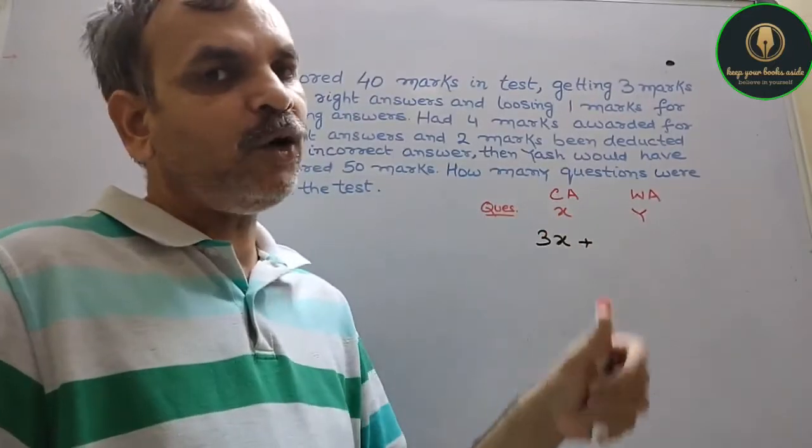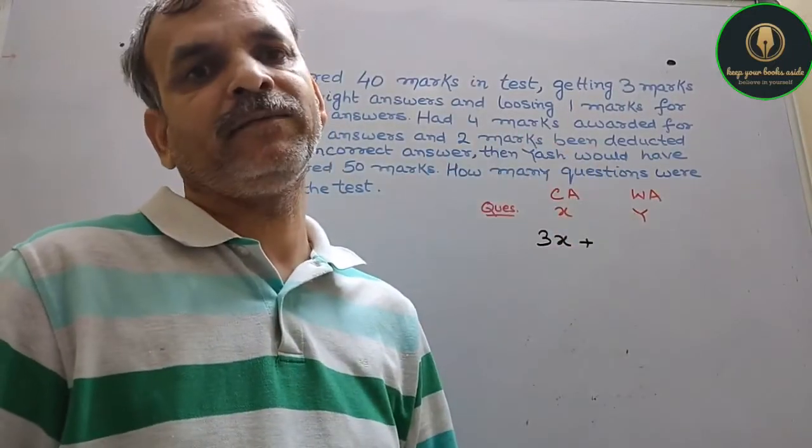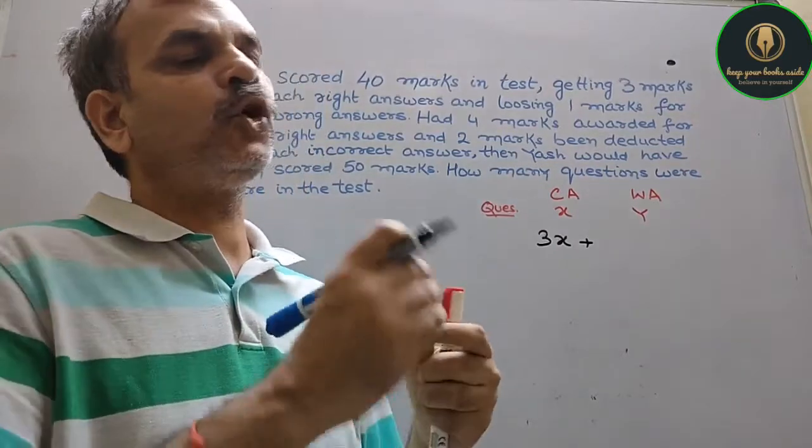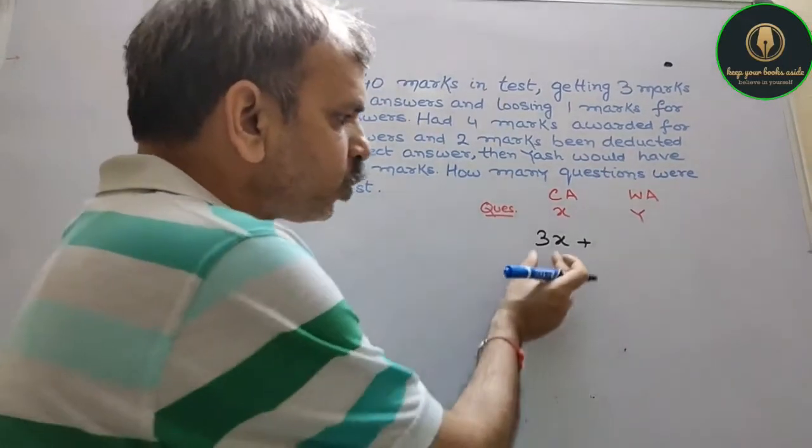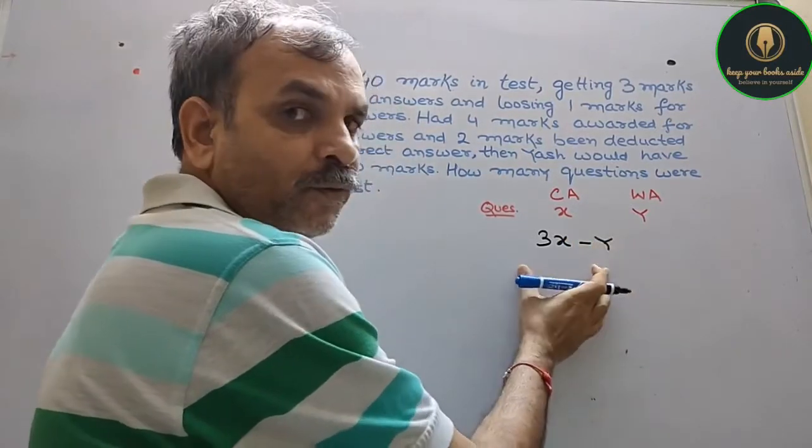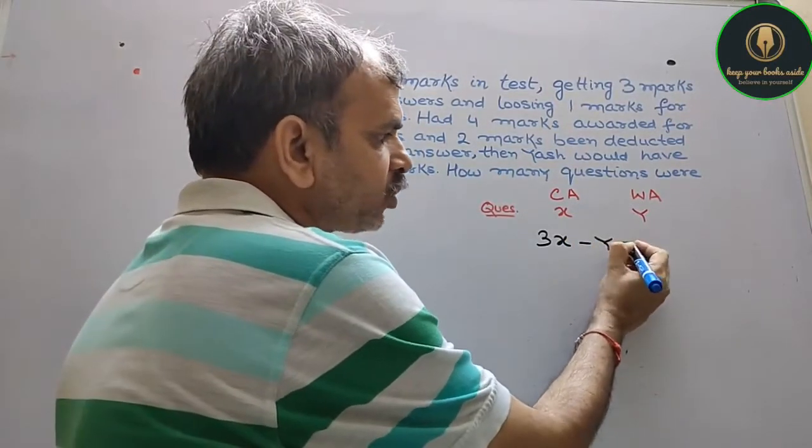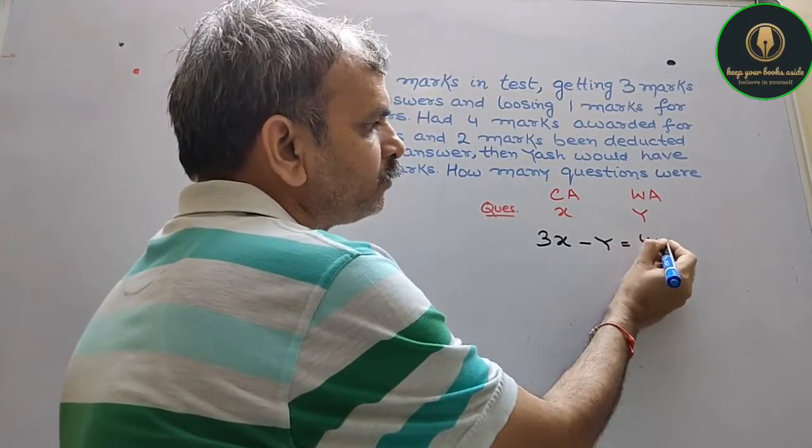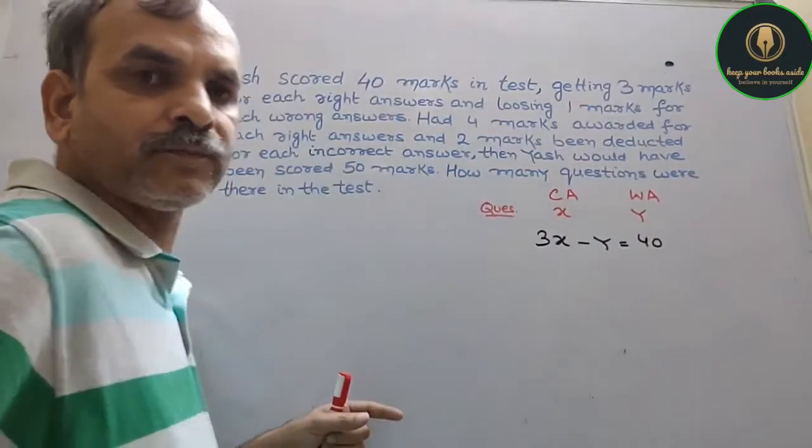Instead of Y, we can go for minus Y for that, because he has told 'lose'. So how much did he score? He loses minus Y. Then he has scored 40 marks. Okay?